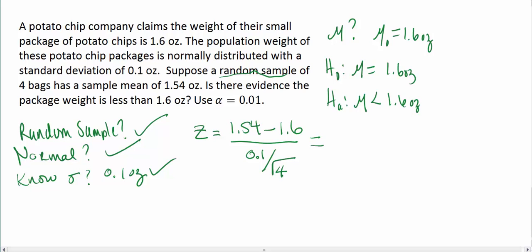This is equal to a numerator value of negative 0.06 all divided by a denominator of 0.05, which is equal to a total z-score of negative 1.20.